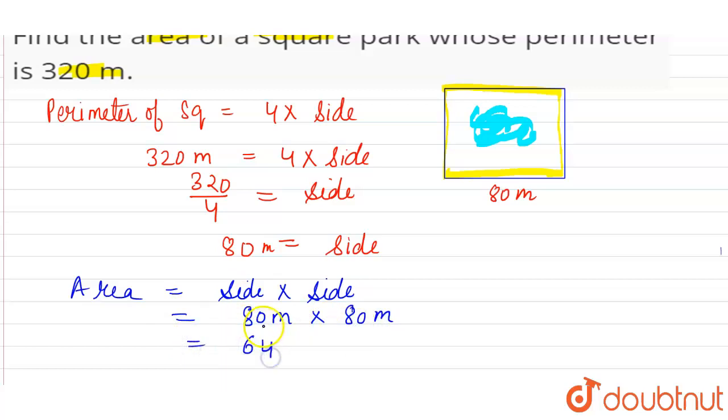So 6400 square meters is the area of the square whose perimeter is 320 meters.